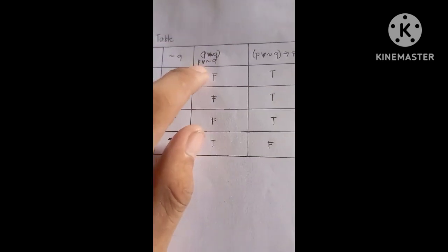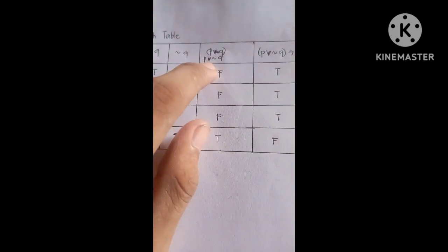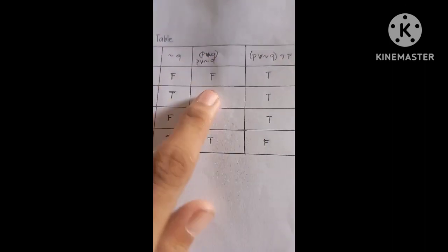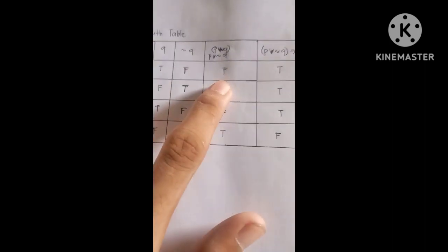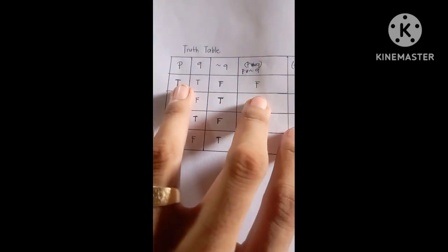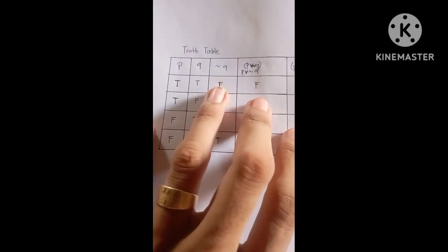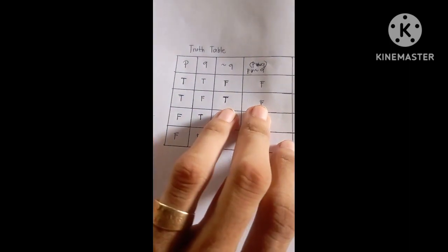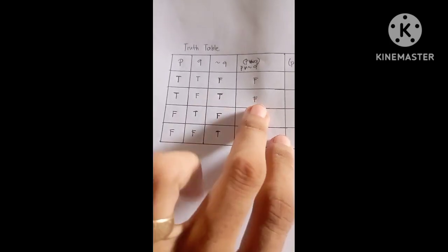And then the V, V is or. For P V not Q, when P is true and not Q is false, it is true. For false, true, true, it is false.